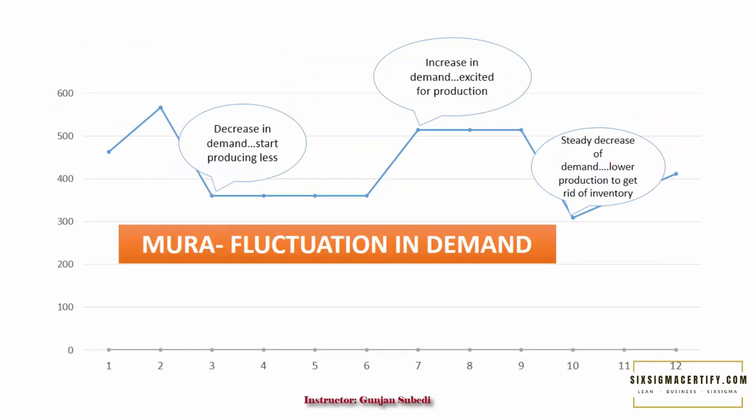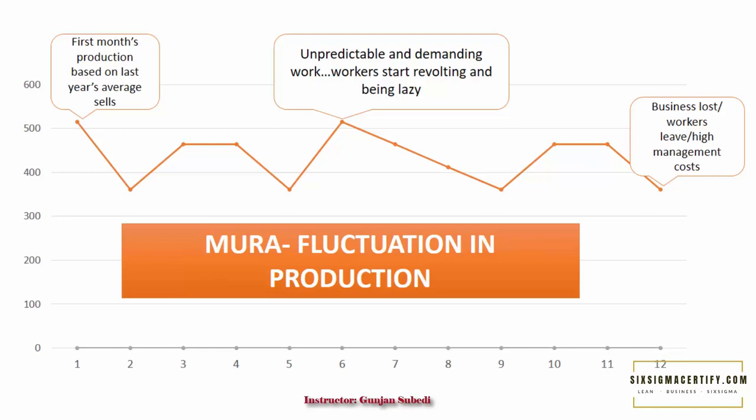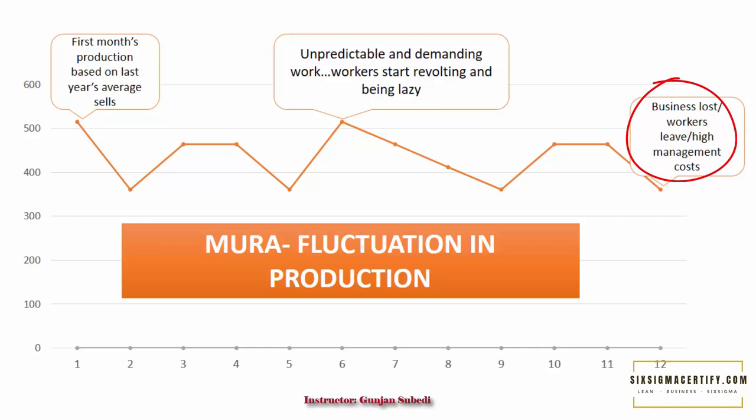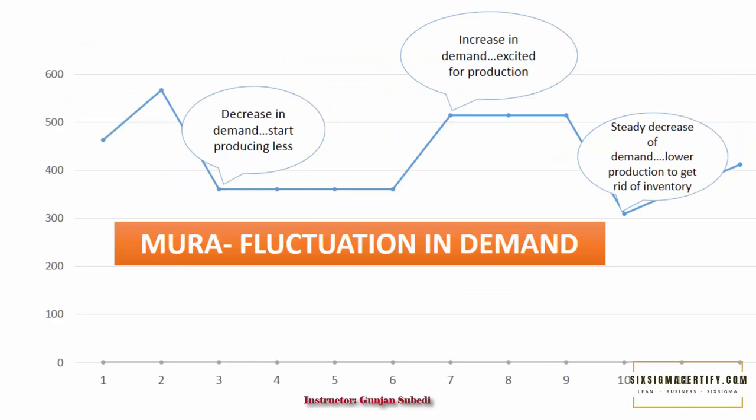There could be fluctuations in production and similarly there could be fluctuations in demand. For example, suppose there is a fluctuation in production. The first month started with high production and sometimes there was unpredictable and demanding work also. This created pressure — or Muri — on the workers, and there were different results brought by that pressure.